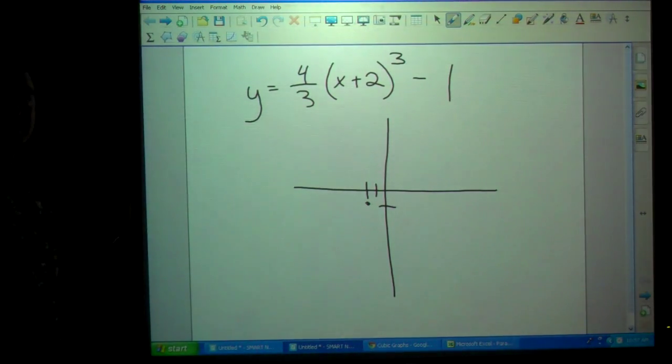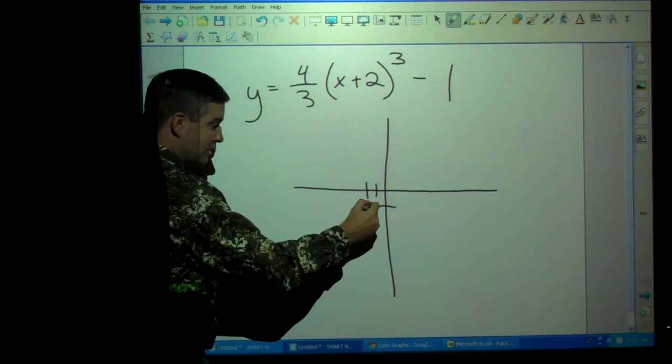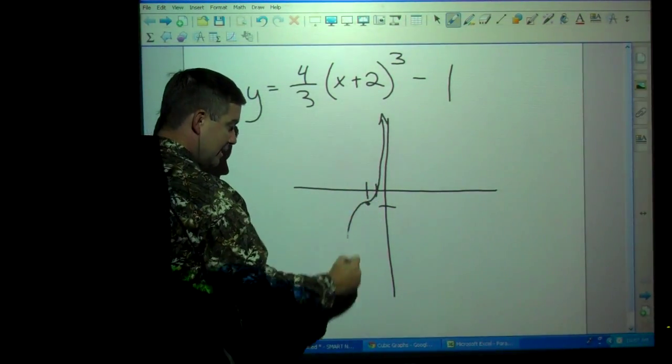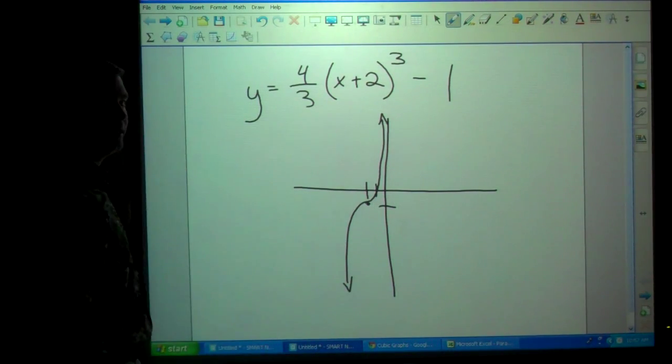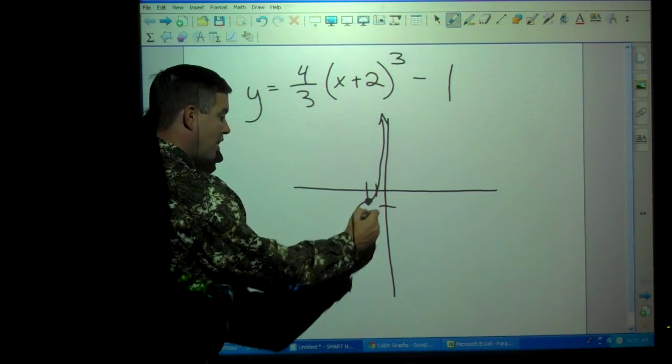A is what? A is four-thirds. It's positive. And it is also what? Greater than one. So what does that tell me? That it's going to be narrow. It's going to go up on the right, down on the left, and it's going to be a little bit narrower. Up on the right, down on the left, a little bit narrower. And that's it. And that's all the detail that I'm looking for from you on graphing a cubic.